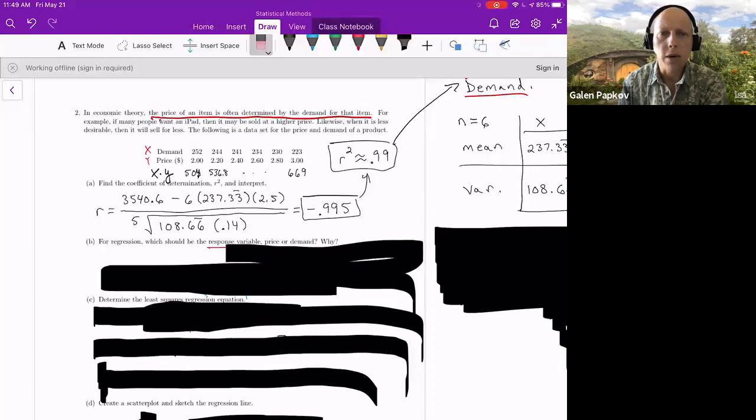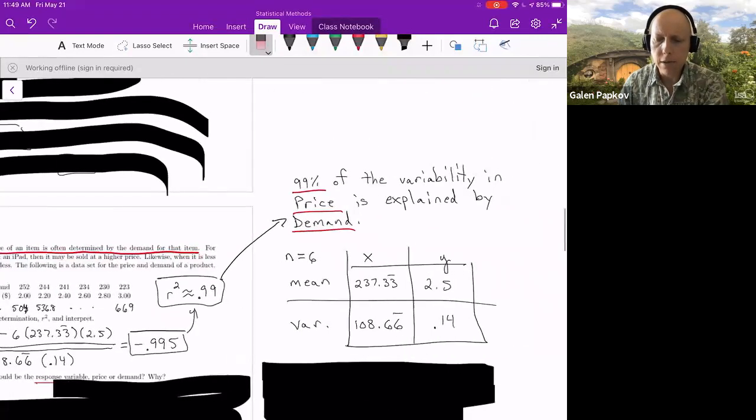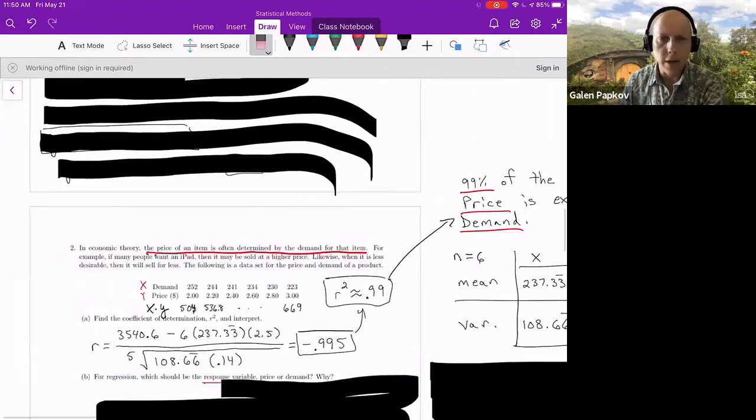And so what does this mean? Well, now we want to interpret the coefficient of determination, not interpret the relationship between price and demand. This is different from the previous interpretation in the last problem. And so this implies that 99% of the variability in price was explained by the X variable demand. That's the interpretation of R squared, which is what part A was looking for here.